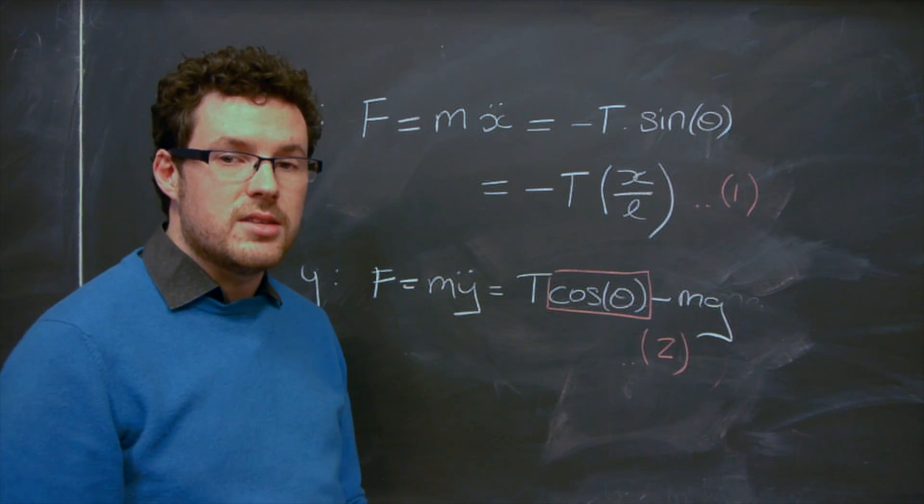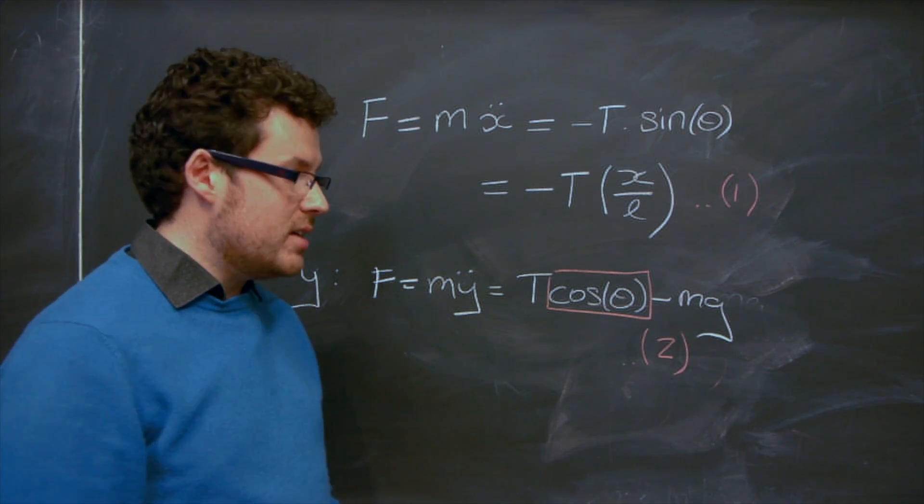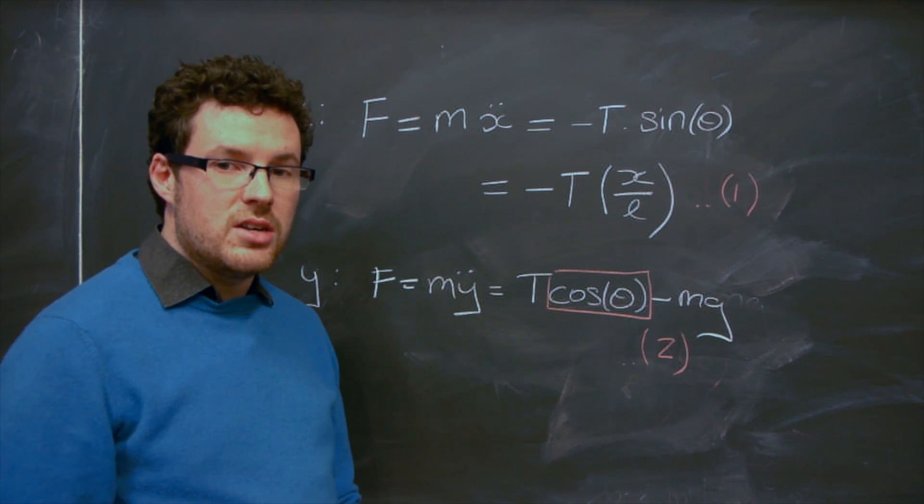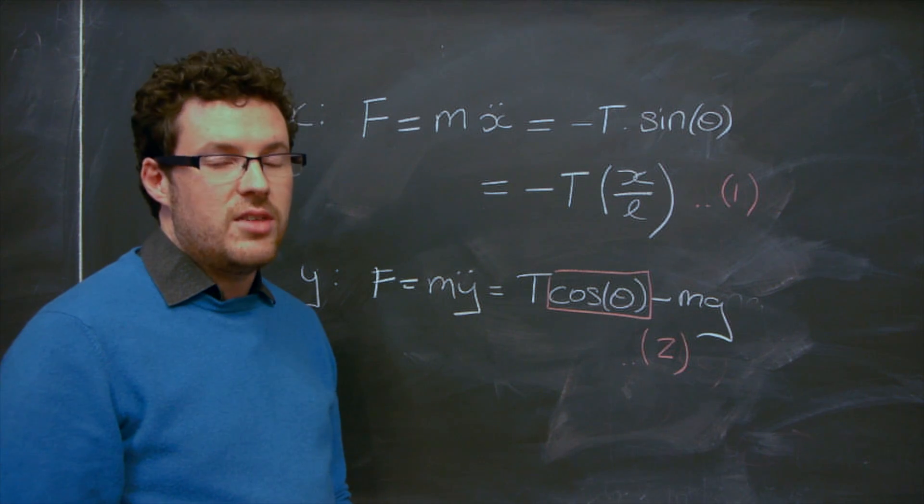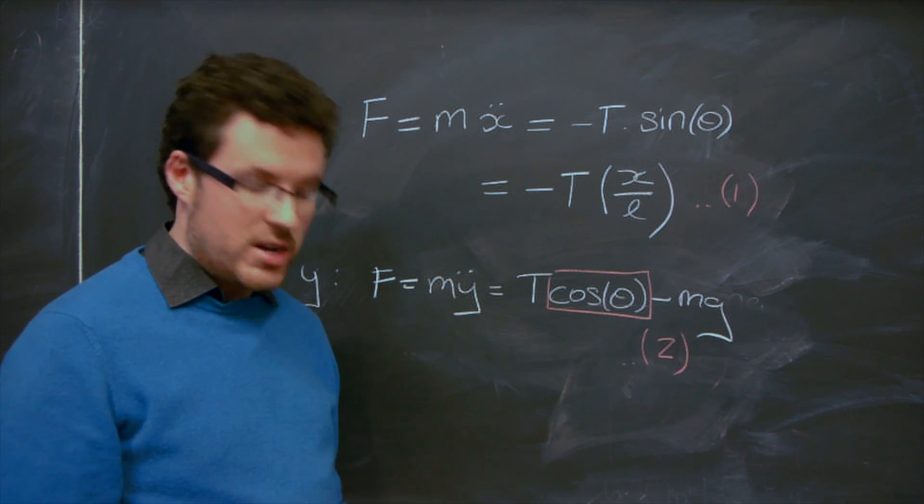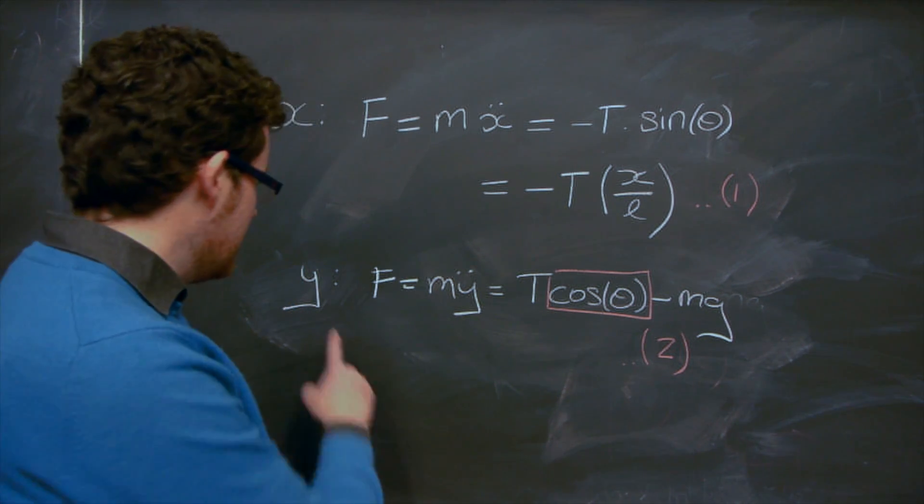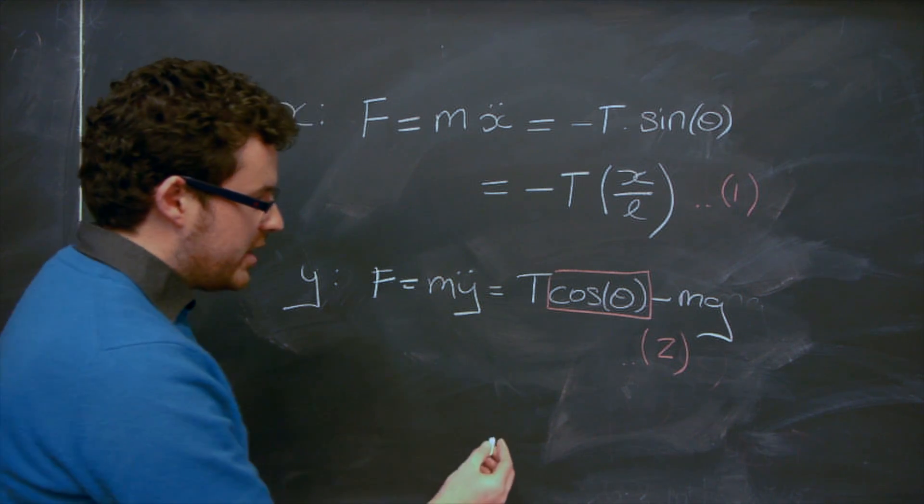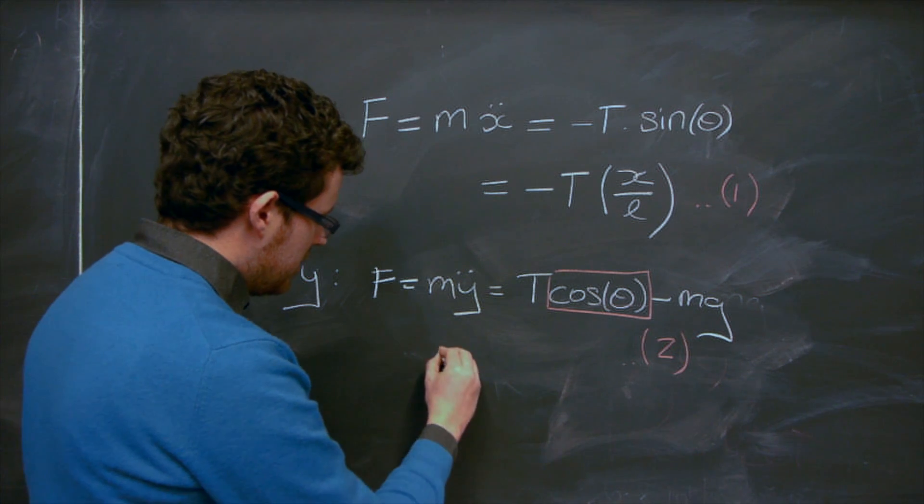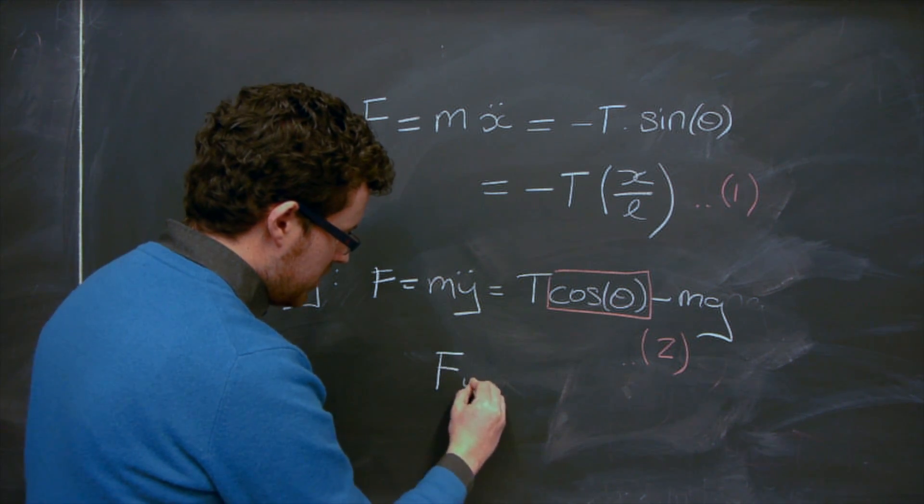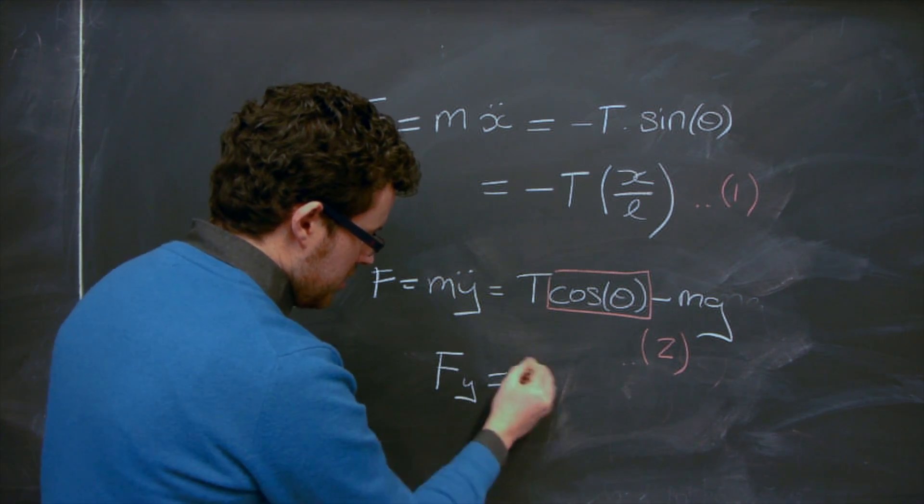The second consequence of keeping theta small is that the pendulum's deviation in the vertical y direction is much smaller than its deviation in the horizontal x direction. So this will allow us to put this second term here in the y direction. So force in the y direction is going to be equal to zero.